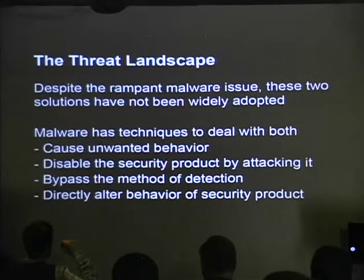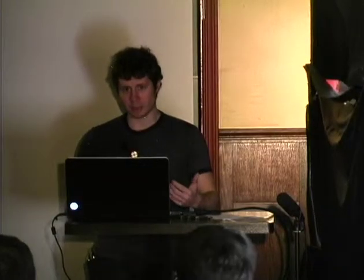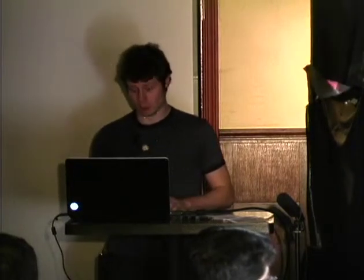We're going to show you two techniques to break application whitelisting. It's essentially the opposite of signature-based antivirus. Signature-based AV assumes everything it doesn't know about is good; application whitelisting says everything it doesn't know about is bad. That allows it to detect things that would otherwise go undetected. When a new threat is developed today, it will be detected by the whitelisting solution, which can either prevent execution, prompt the end user, or audit the behavior and report it to a security console.